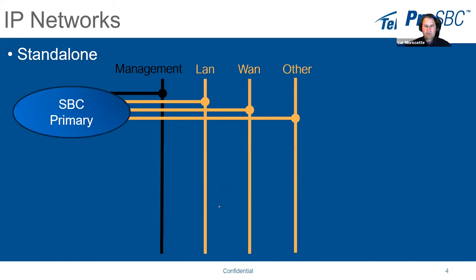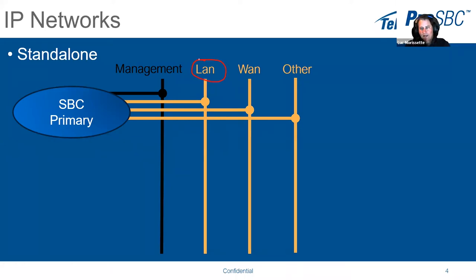If you have a standalone SBC, you will have just one device running. You will have your management interface connecting to the SBC, and then one LAN 1 interface for the LAN and another for the WAN. If you need more, you can add more. Each of those are represented by a physical interface on your server — real network cards on bare metal, or virtual interfaces assigned to the guest on a virtual machine.